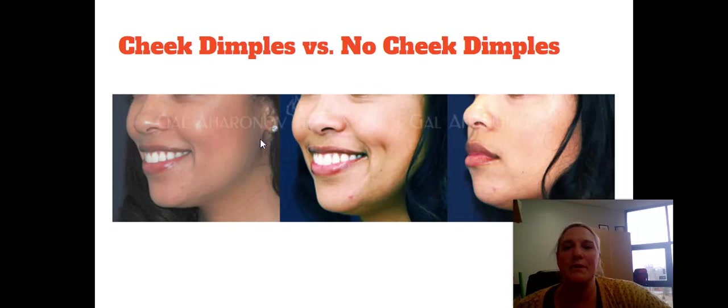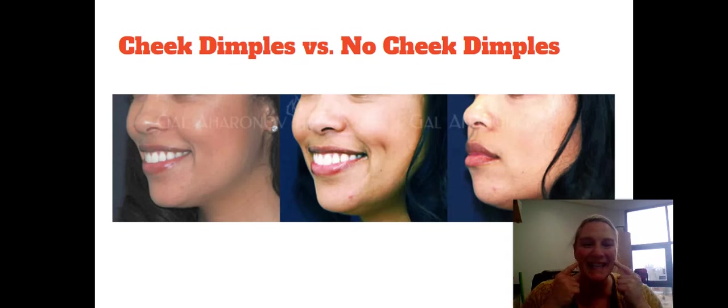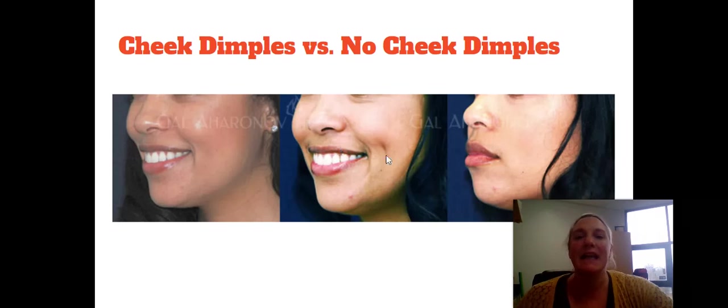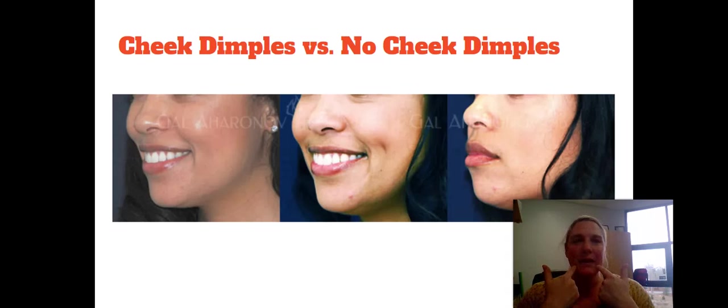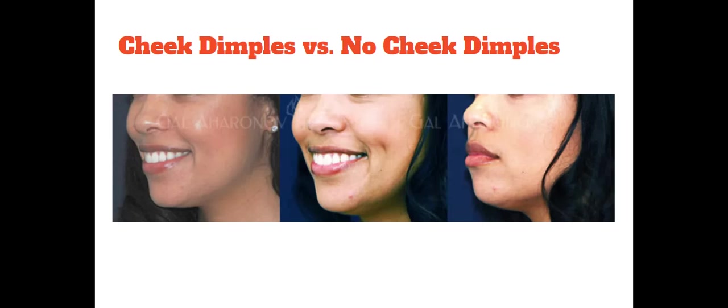The next one is dimples or no cheek dimples. When you smile, look at your cheeks — nowhere else — and it needs to be a true dimple in at least one cheek. Some people have one cheek, some have both. We're not talking about smile lines, but the actual dimple. Write dimples or no dimples. For handedness, there's argument about whether it's a fully inherited trait, but go with whatever hand you normally write with and put right-handed or left-handed.